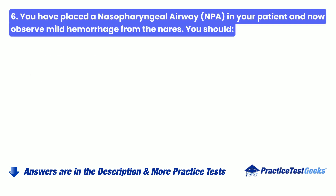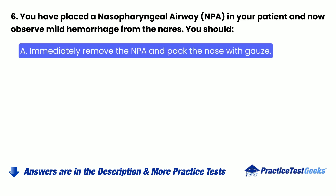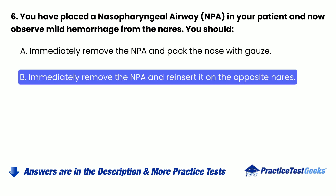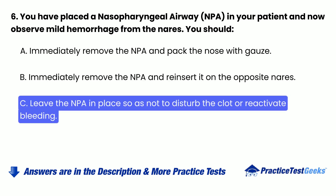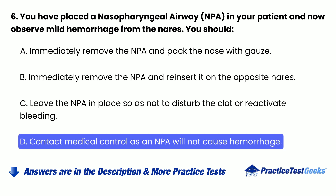Question 6: You have placed a nasopharyngeal airway (NPA) in your patient and now observe mild hemorrhage from the nares. You should: A. Immediately remove the NPA and pack the nose with gauze. B. Immediately remove the NPA and reinsert it on the opposite nares. C. Leave the NPA in place so as not to disturb the clot or reactivate bleeding. D. Contact medical control, as an NPA will not cause hemorrhage.